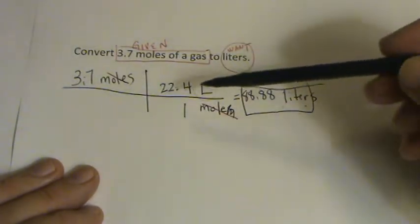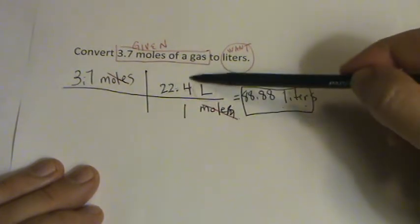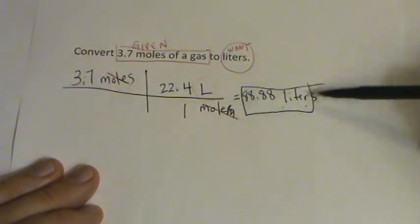So the key to solving these is to know that one mole of any gas is 22.4 liters. That way you can cross out moles and end up with liters.